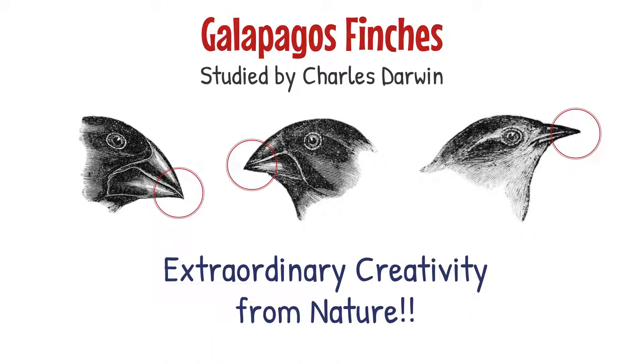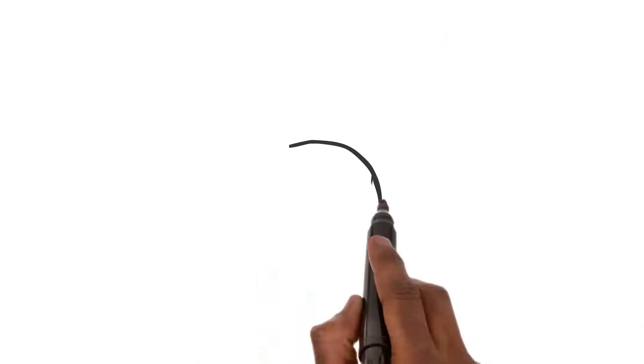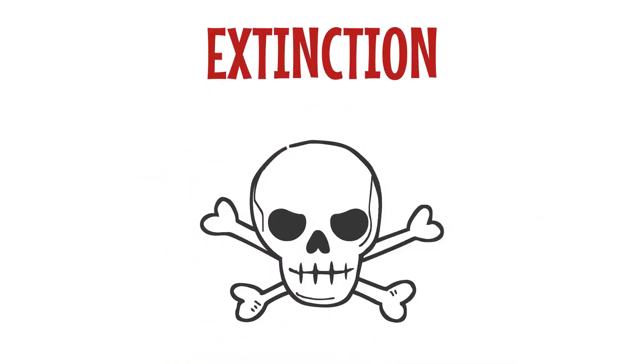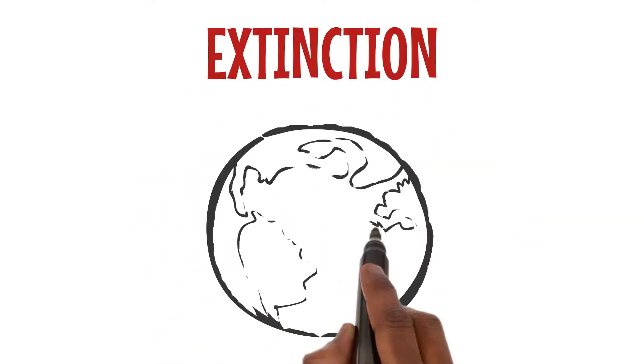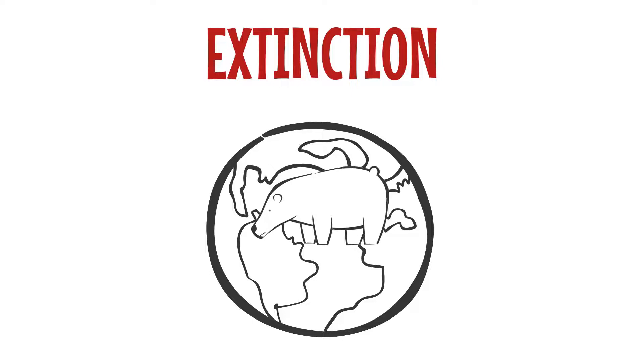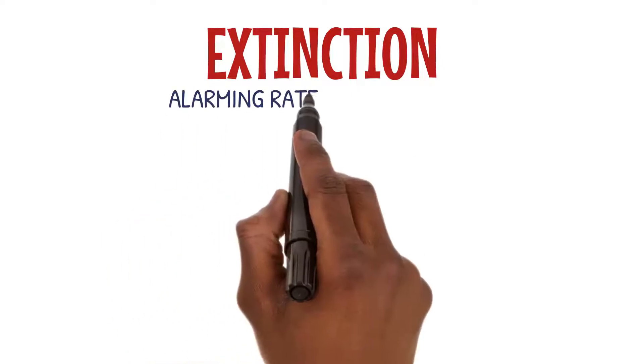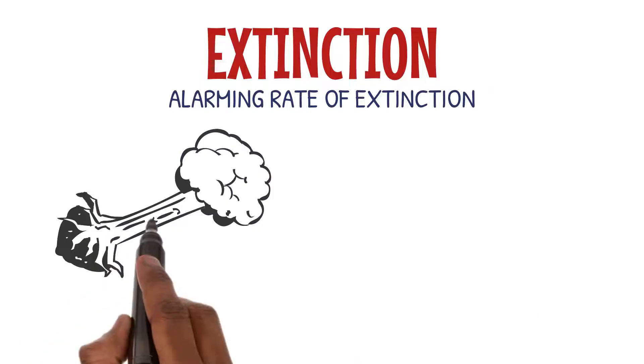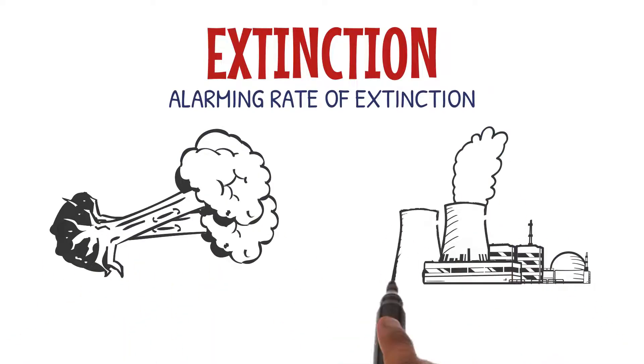But with speciation comes extinction. Extinction is when a species completely disappears from the face of the Earth. It's a natural process, but it's happening at an alarming rate today due to human activities like habitat destruction and pollution.